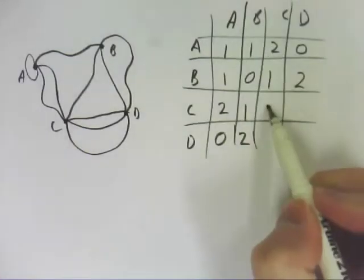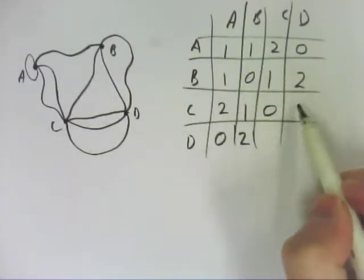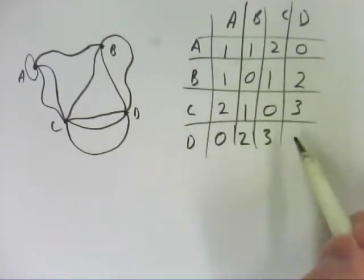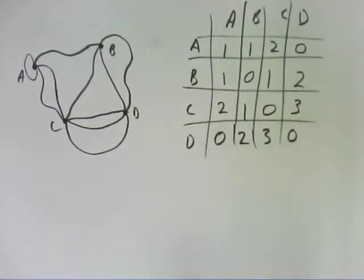From C to C, there are none. From C to D, there are three, and the same backwards, and from D to D, there are none. So there's a table.